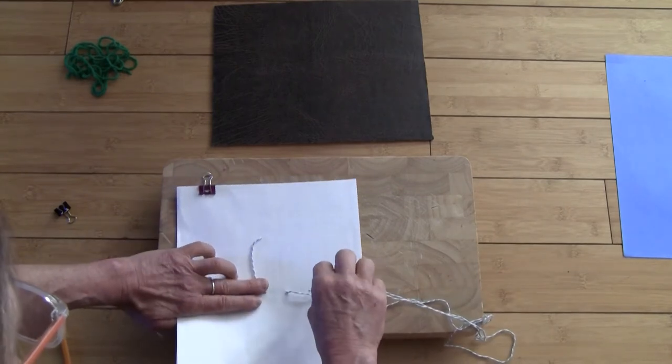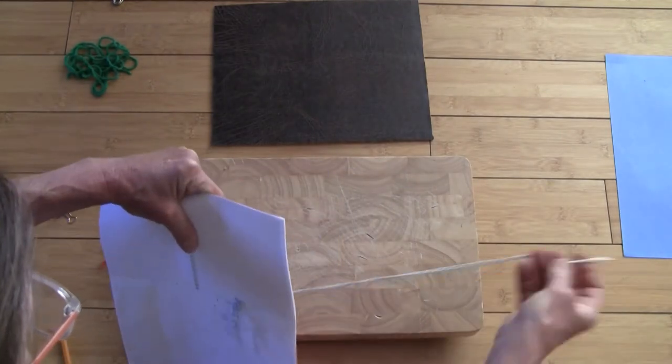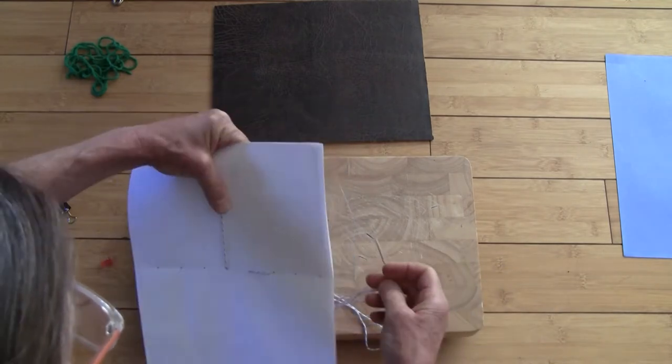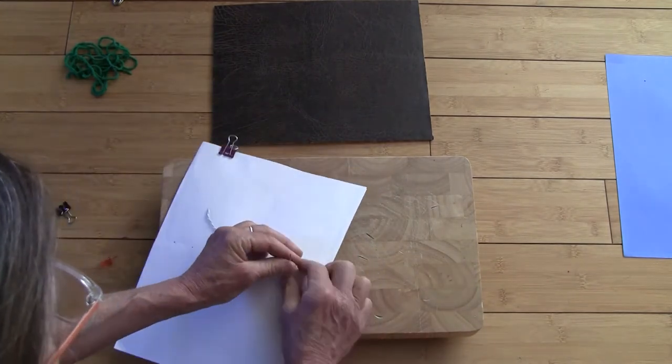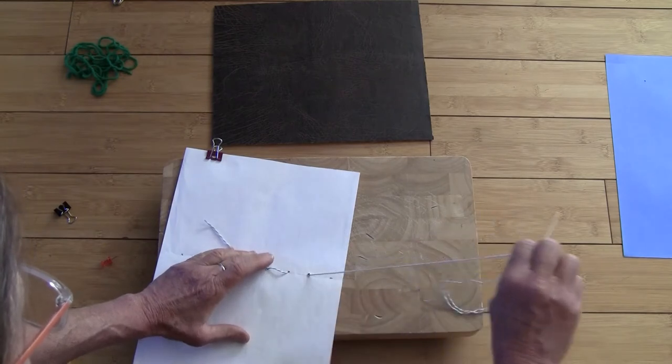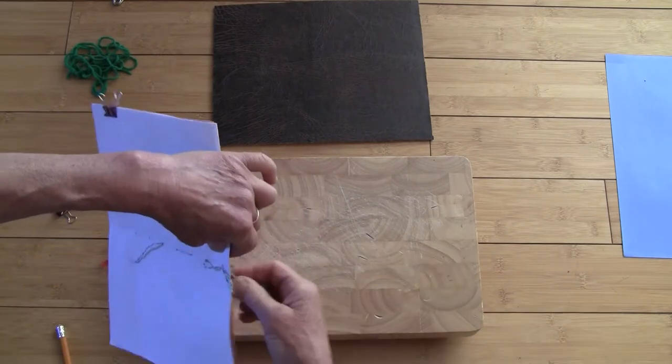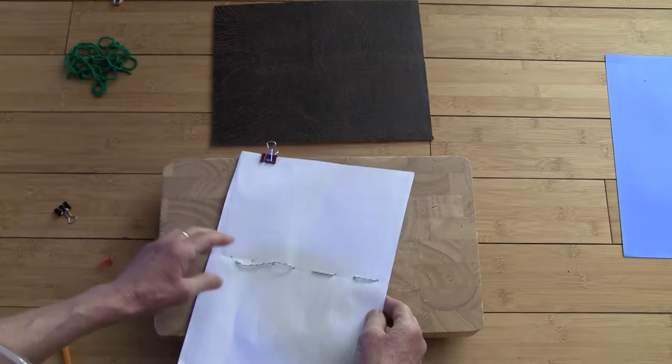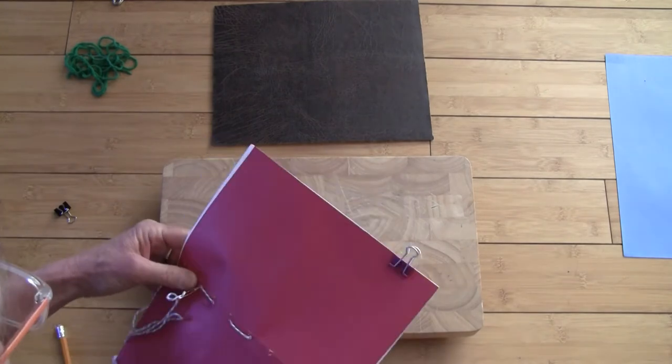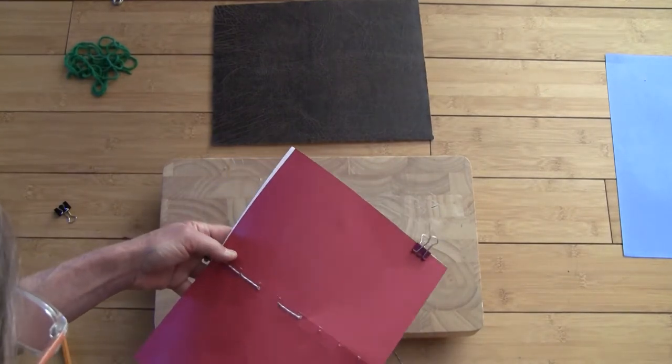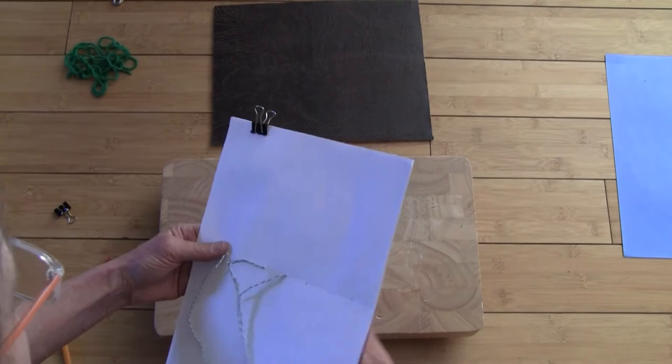And then, I'm going to go down through the next one. So, you're just going in and out. And then, down through the next one. And when you get to the end, pull it through and you're just going to go back the other direction. So, flip it over and go back the other direction. This is called a saddle stitch. And work your way all the way back to the other end of the page.